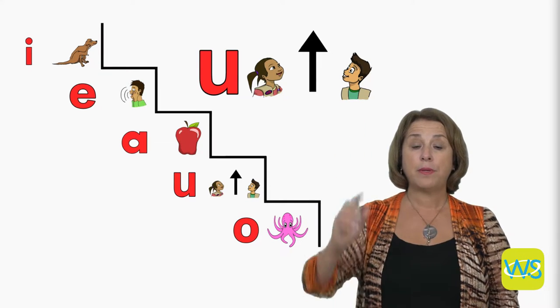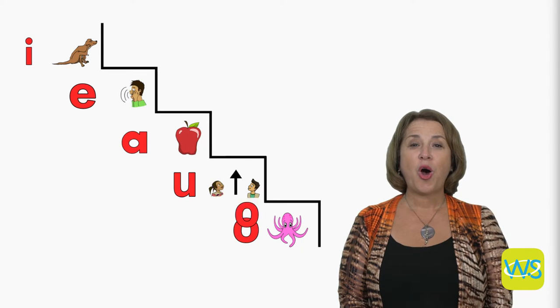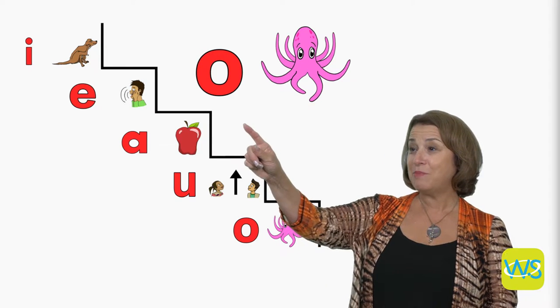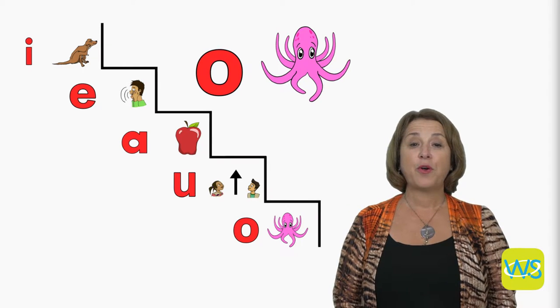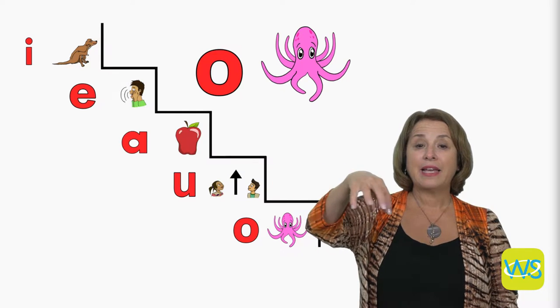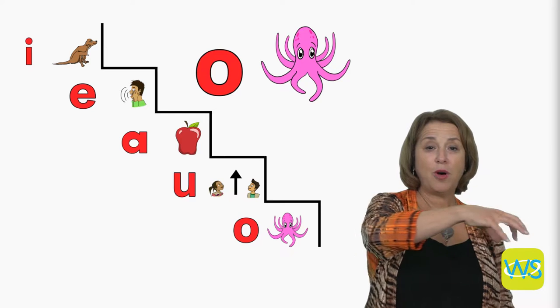The last step at the bottom is the letter O. The letter O has a picture of an octopus by it, because the letter O makes the short sound AH, like an octopus. See my octopus walking around?